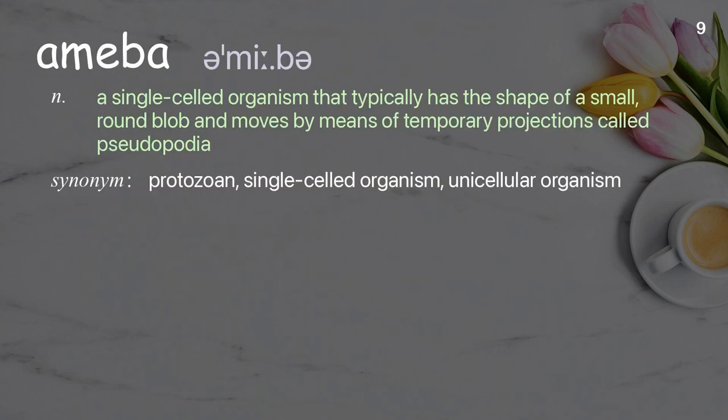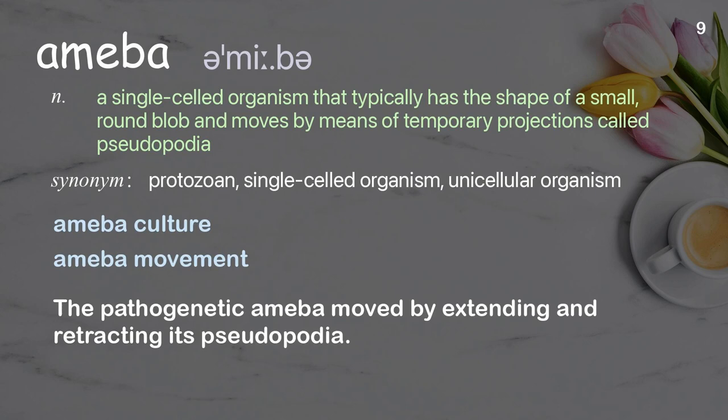Amoeba: A single-celled organism that typically has the shape of a small, round blob and moves by means of temporary projections called pseudopodia. Examples: Amoeba culture, Amoeba movement. The pathogenetic amoeba moved by extending and retracting its pseudopodia.